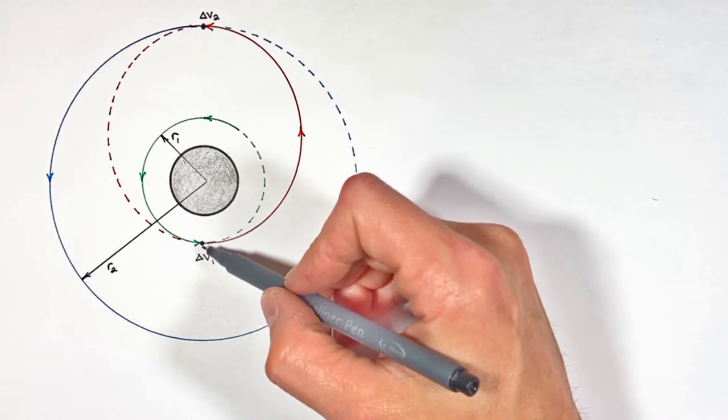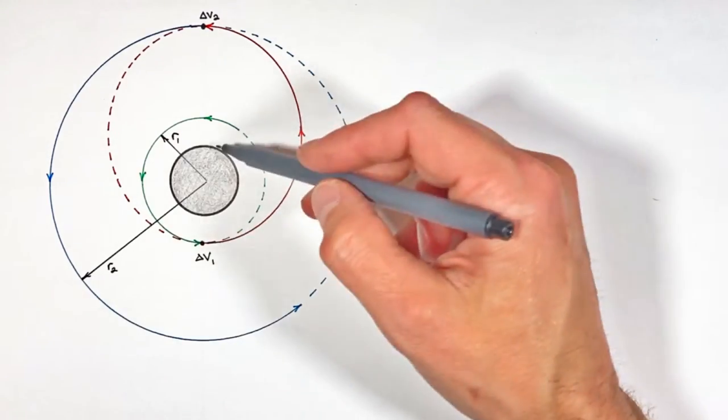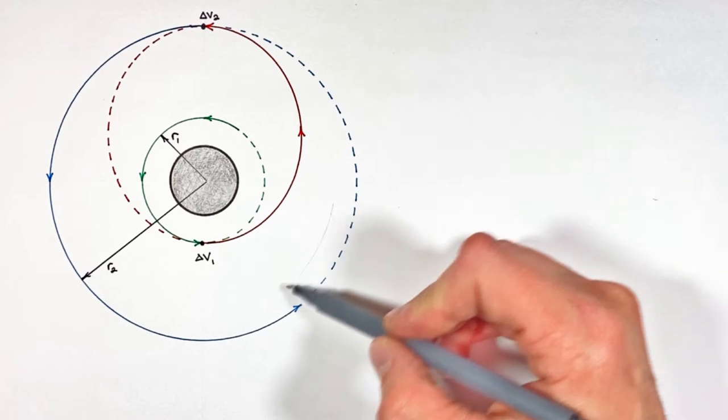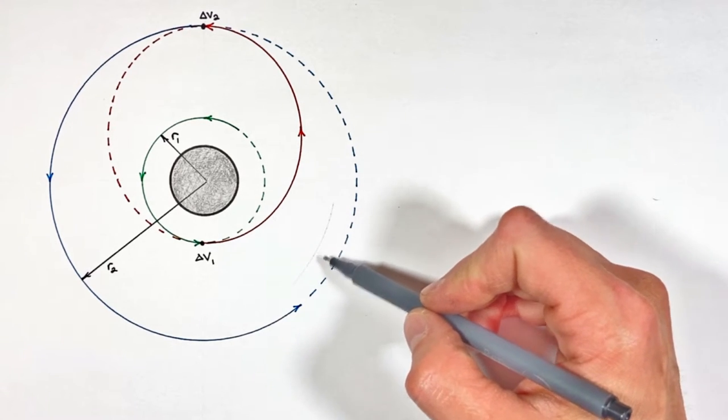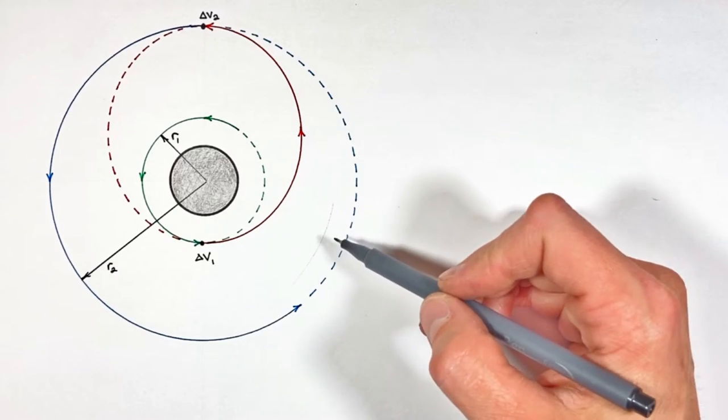But today what I want to do is solve for the time it's going to take this satellite to transfer from this inner radius to this outer radius or outer orbit. Oh look at that, I made a little mark here. That's gonna bother me. It's probably gonna bother a few of you out there, but folks we're just gonna have to live with it. Sorry.